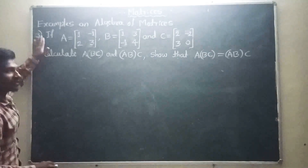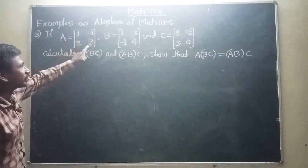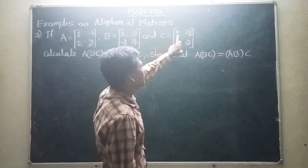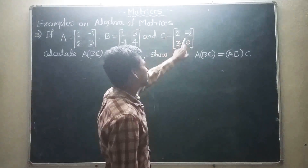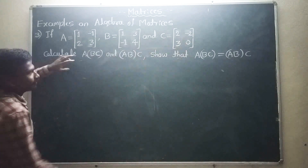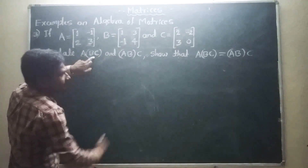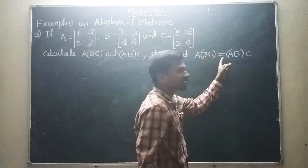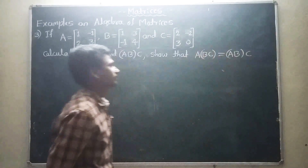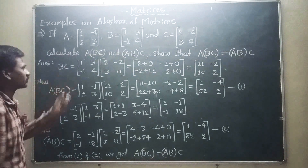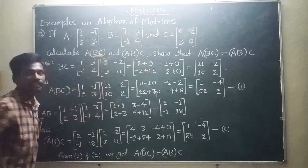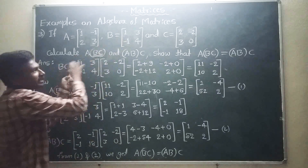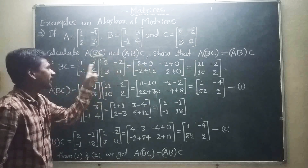Example number 3: If A is equal to 1, minus 1, 2, 3; B is equal to 1, 3, minus 1, 4; and C is equal to 2, minus 2, 3, 0. Calculate A into BC and AB into C. Also show that A into BC is equal to AB into C. Answer: First solve B into C. B into C equals B matrix into C matrix, row into column multiplication.